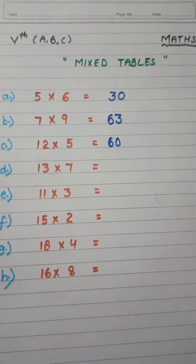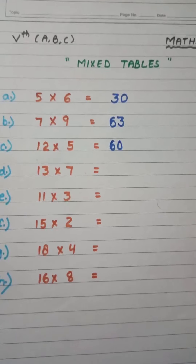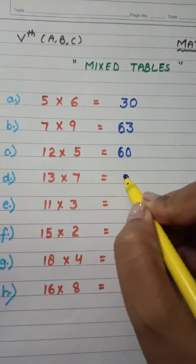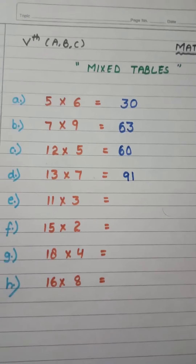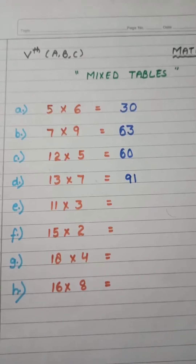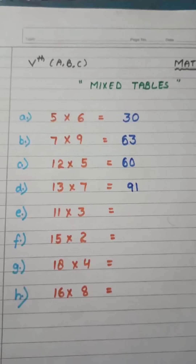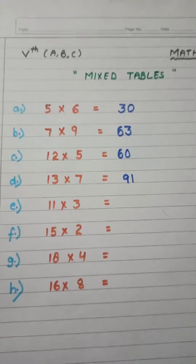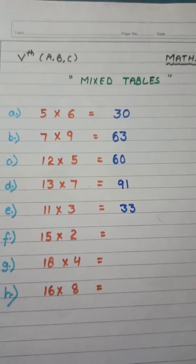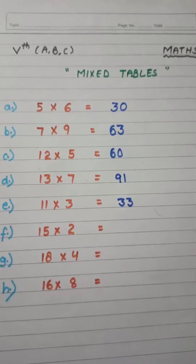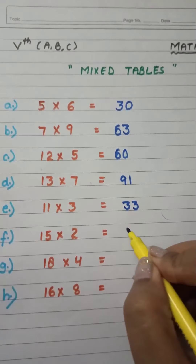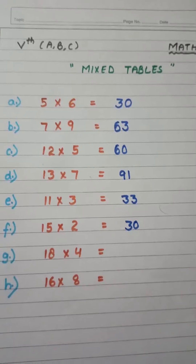Part D: thirteen sevens are 91. Part E: eleven threes are — eleven is the easiest table to learn, and so is ten. Eleven threes are 33.